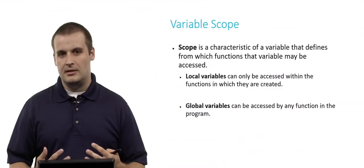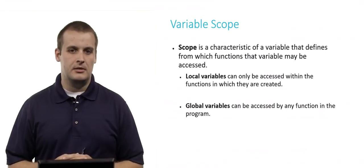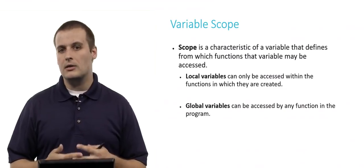Scope is a characteristic of a variable that defines from which functions that variable can be accessed. There are two primary scopes in C: local variables and global variables.